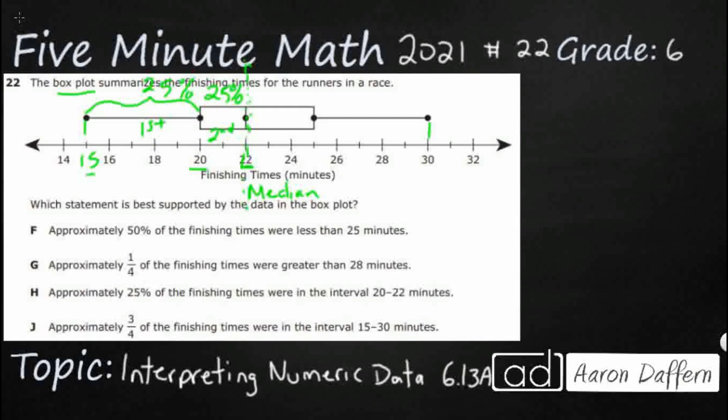Then we have our third quartile. And it goes from this dot to this dot. So it's going to range from 22 up to 25. It's going to be another 25%. And then finally, our final quartile is going to be from that 25 up to 30. And it's going to be pretty big spread, kind of like it was from 15 to 20.